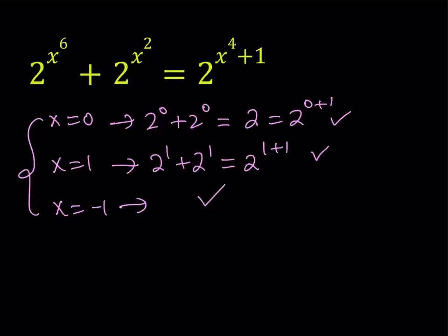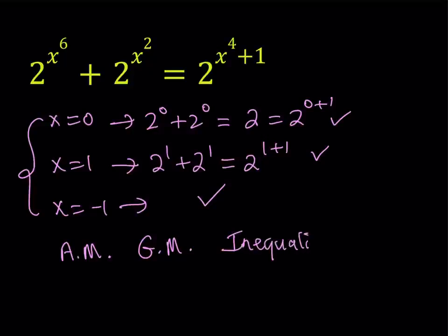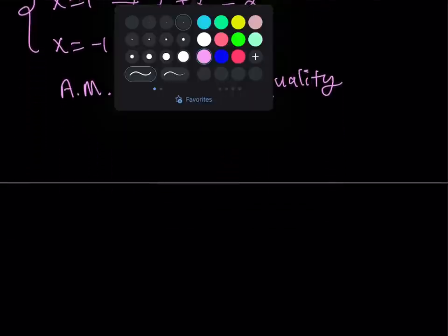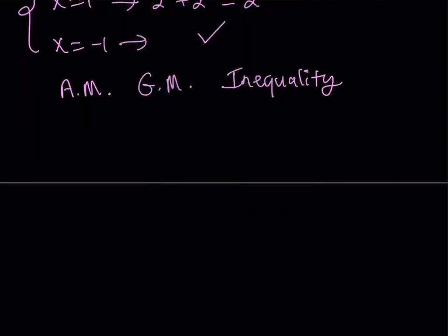Now, how do we find the other solutions, or how do we prove that there are no other solutions? We're going to be using some inequalities — specifically what's called the AM-GM inequality. The AM-GM inequality basically deals with the arithmetic mean and the geometric mean of two or more numbers. In this case we're dealing with two numbers, so let's start with x to the sixth and x squared, because that's going to be important in my setup.